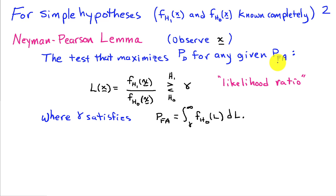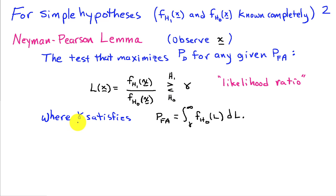The test which maximizes the probability of detection for any given probability of false alarm is something known as a likelihood ratio. That's the ratio of the probability density function under H1 evaluated at our observed data X to the probability density function under H0 evaluated at X. If that ratio is greater than a threshold gamma, we decide H1 is true; if less, we decide H0. We choose our threshold to obtain the desired probability of false alarm. L here is our ratio, and the probability of false alarm is the area under its density from gamma to infinity.